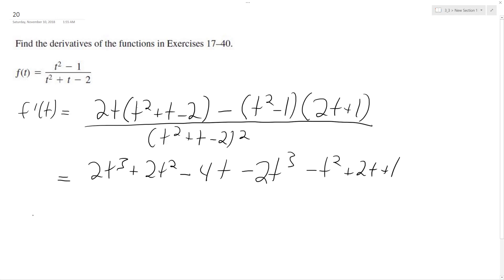And then our denominator, but I'm going to leave that out for now. So the numerator simplifies to t squared minus 2t plus 1 all over t squared plus t minus 2 squared.